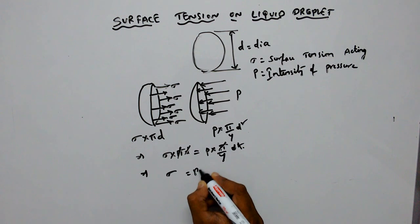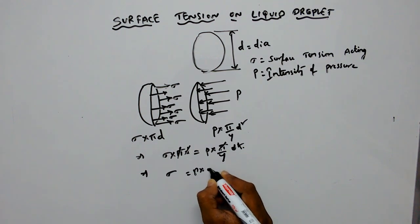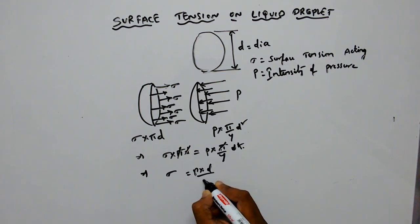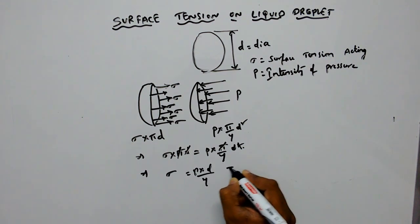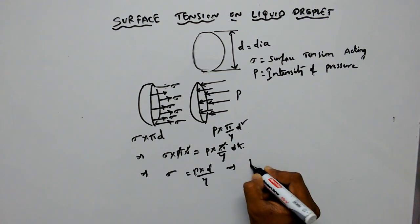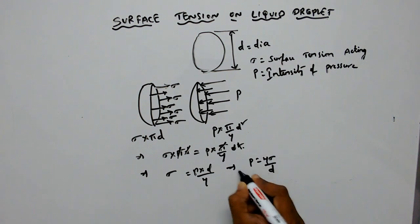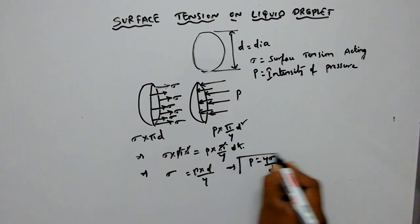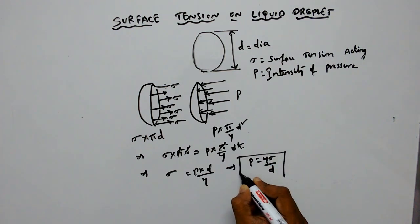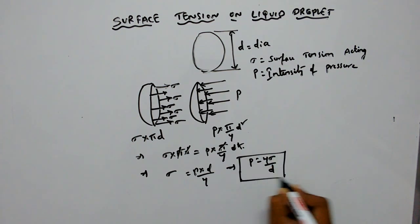That implies Sigma equals P into d by 4, and therefore P equals 4 Sigma by d. This is the intensity of pressure on the liquid droplet.